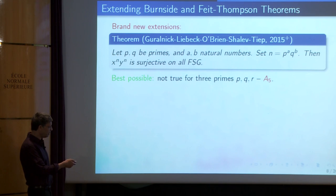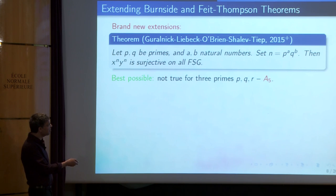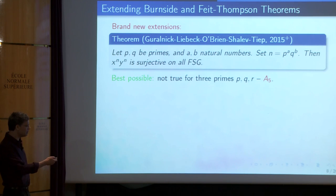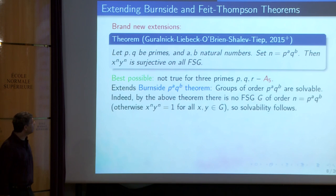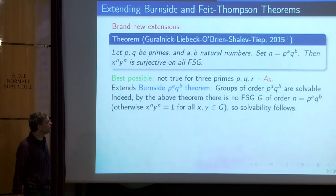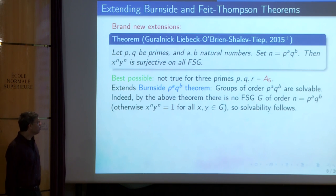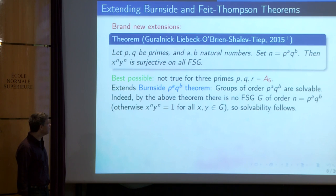This extends the case of a single prime: we said that x^p · y^p is surjective, and this is an extension. It's also best possible in the sense that you cannot replace the condition of two prime divisors by three. For example, A_5 has three prime divisors of its order, so x^60 is identically one — thus x^60 · y^60 will be identically one — so it's trivially false. And this implies Burnside's p^a · q^b theorem: groups of order p^a · q^b are always solvable.